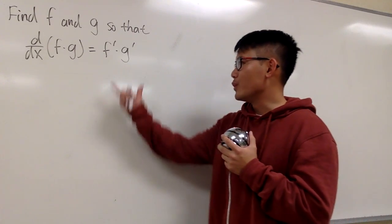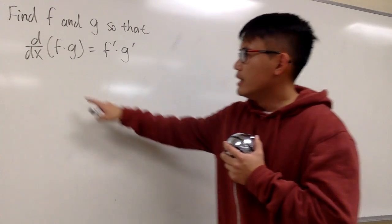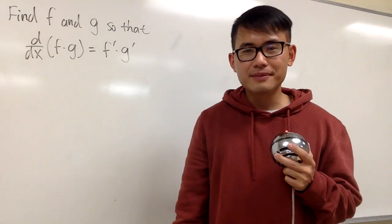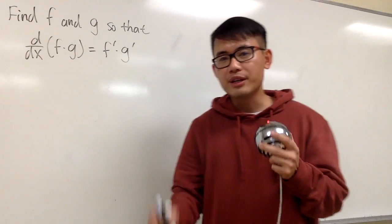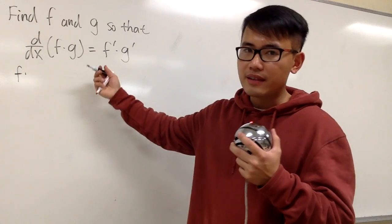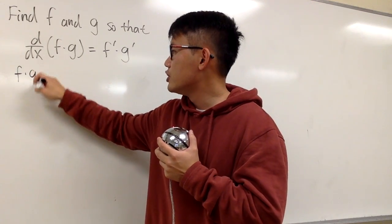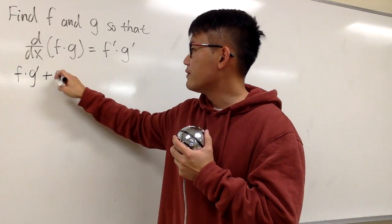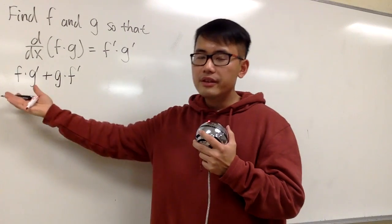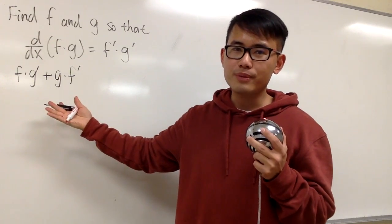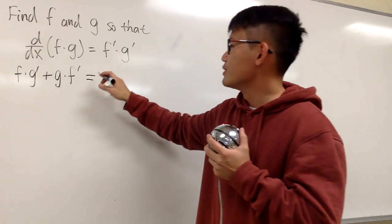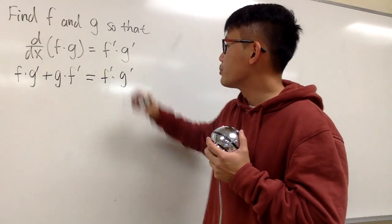We want this to happen, and you know that when we take the derivative of a product there's the legitimate product rule. Let me write that down first: we keep the first function f, then differentiate the second — f times g prime — and add it with the second function times the derivative of the first, which is f prime. This is the legitimate product rule, and we have to set this equal to the fake product rule: f prime times g prime.